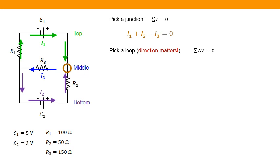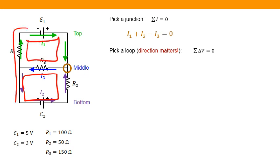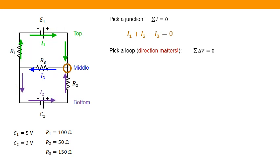Now I need to pick a loop. It's a bit like spotting how many rectangles are in a picture — I can see three possible loops: the bottom loop, the top loop, and the whole outer edge of the circuit. I'm going to start with the top loop, choosing a direction to follow around it.